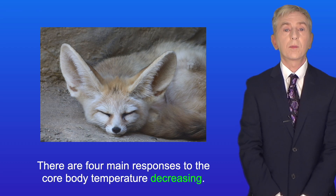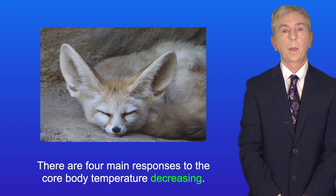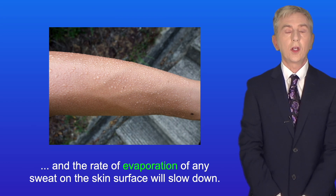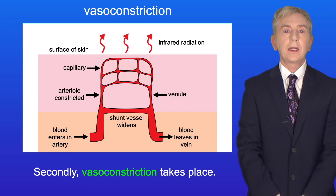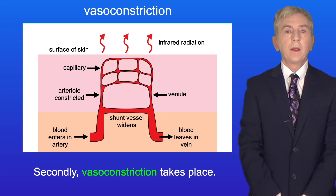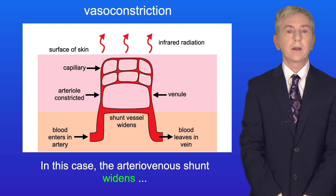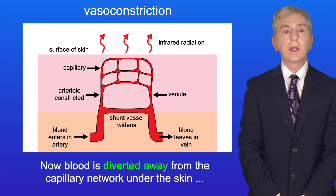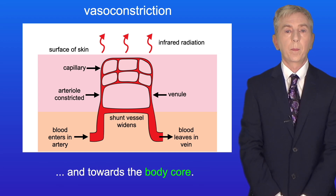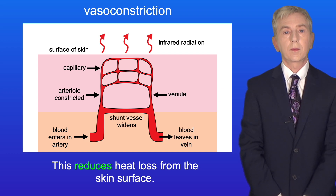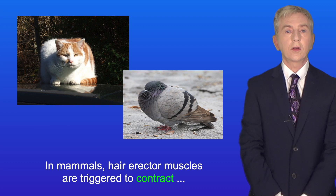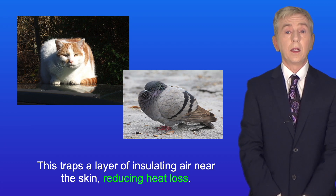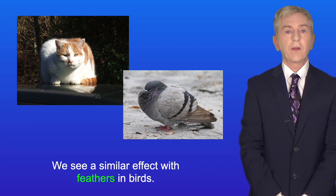There are four main responses to the core body temperature decreasing. Firstly, sweating will reduce or stop, and the rate of evaporation of any sweat on the skin surface will slow down. Secondly, vasoconstriction takes place: the arteriovenous shunt widens and the arteriole constricts or narrows. Blood is diverted away from the capillary network under the skin and towards the body core, reducing heat loss from the skin surface. In mammals, hair erector muscles are triggered to contract, causing hair to stand upright. This traps a layer of insulating air near the skin, reducing heat loss. A similar effect occurs with feathers in birds.